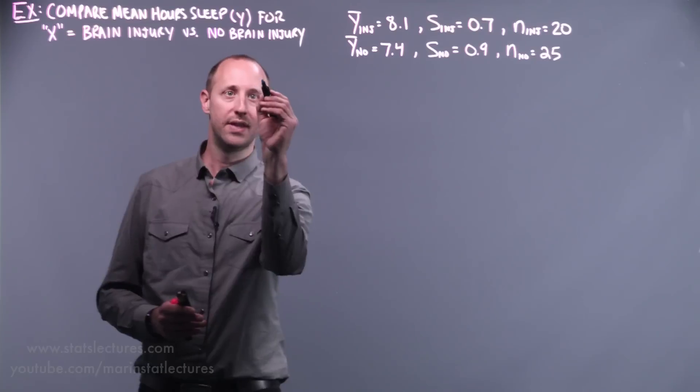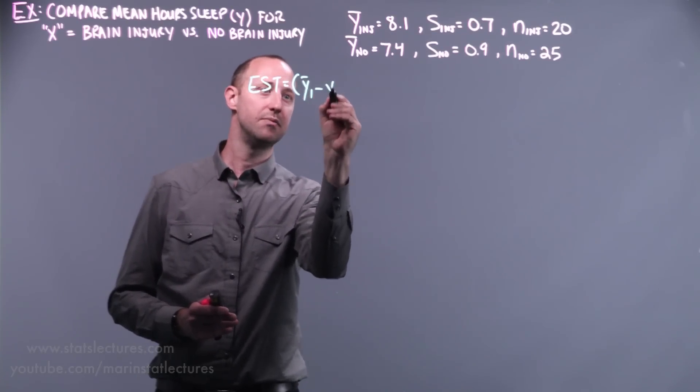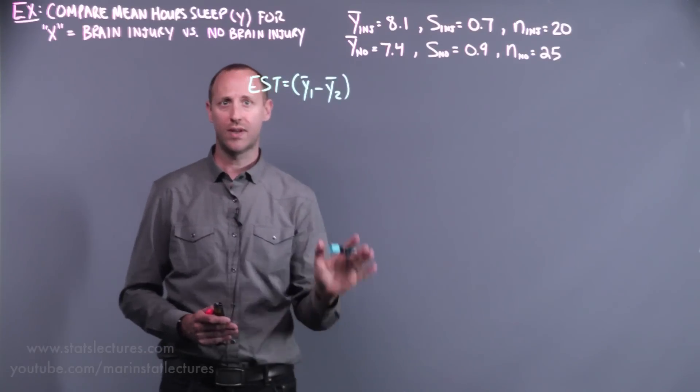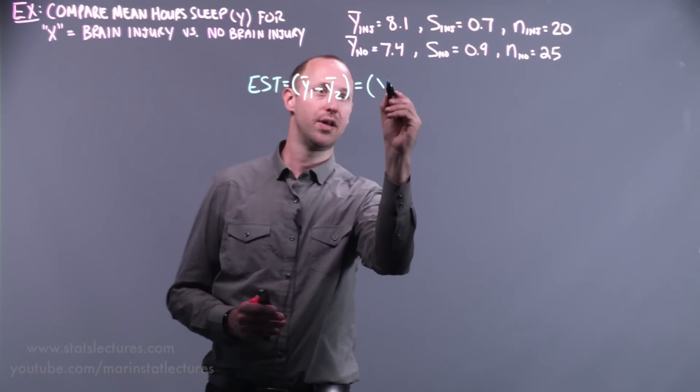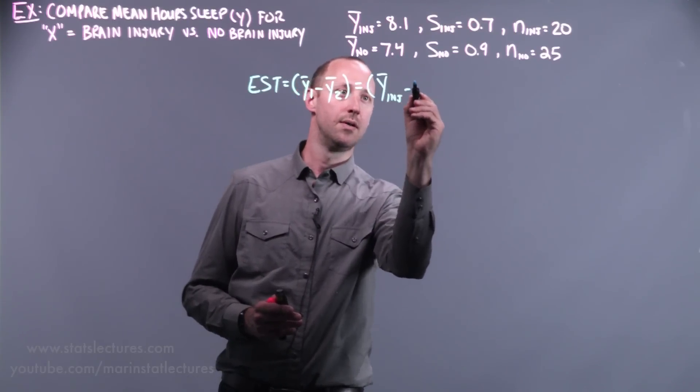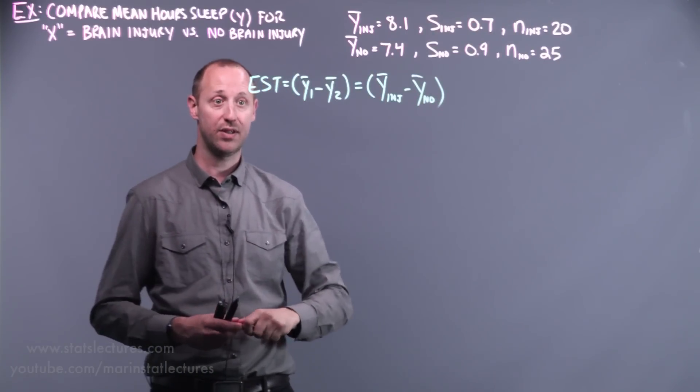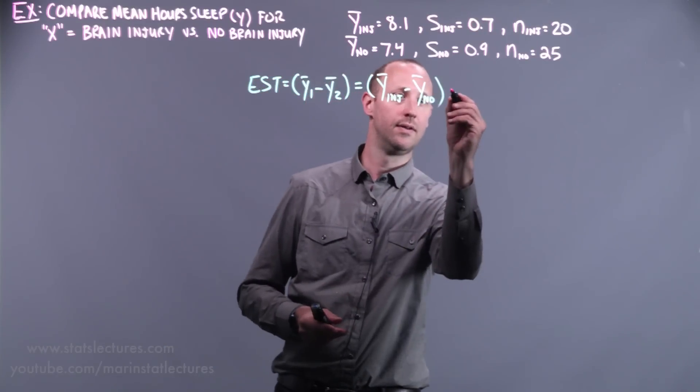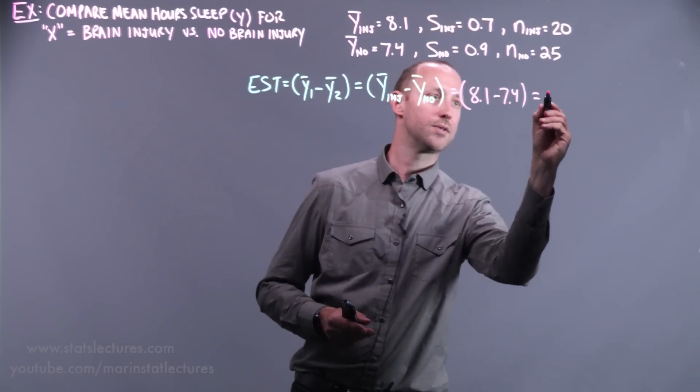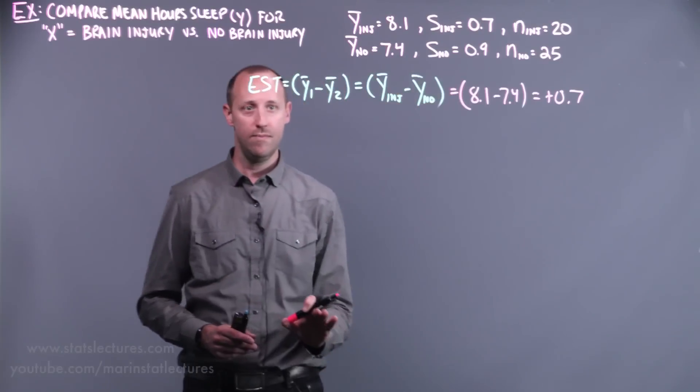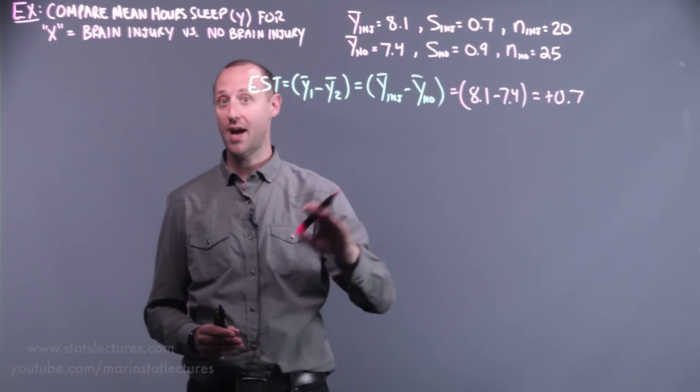The estimate that we're going to work with is the difference in means. The mean for group one minus the mean for group two. I'm going to label group one and group two to keep it generic. In our specific example, here we're looking at the mean for the brain injury group minus the mean for the no brain injury group. If we look specific to our example, we're going to find that 8.1 minus 7.4, which comes out to positive 0.7.